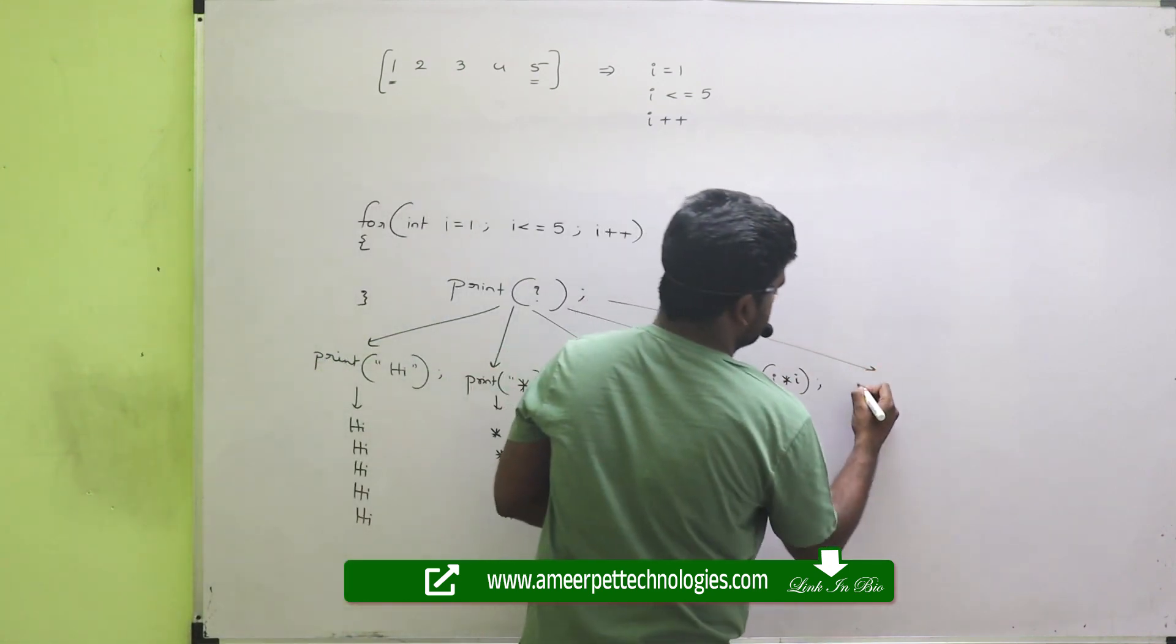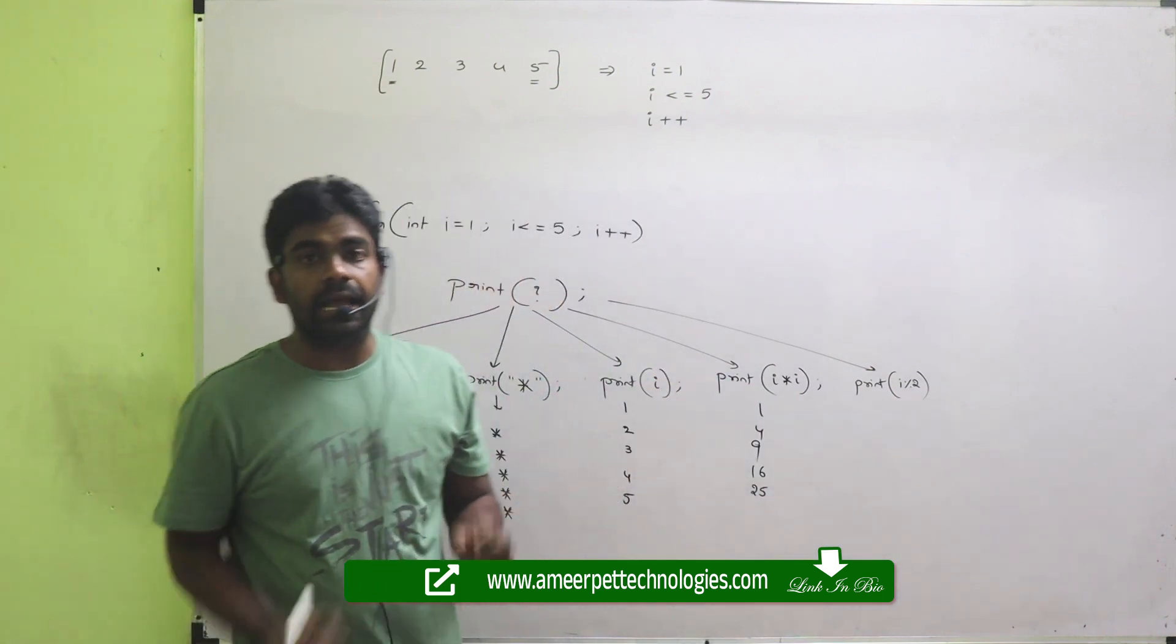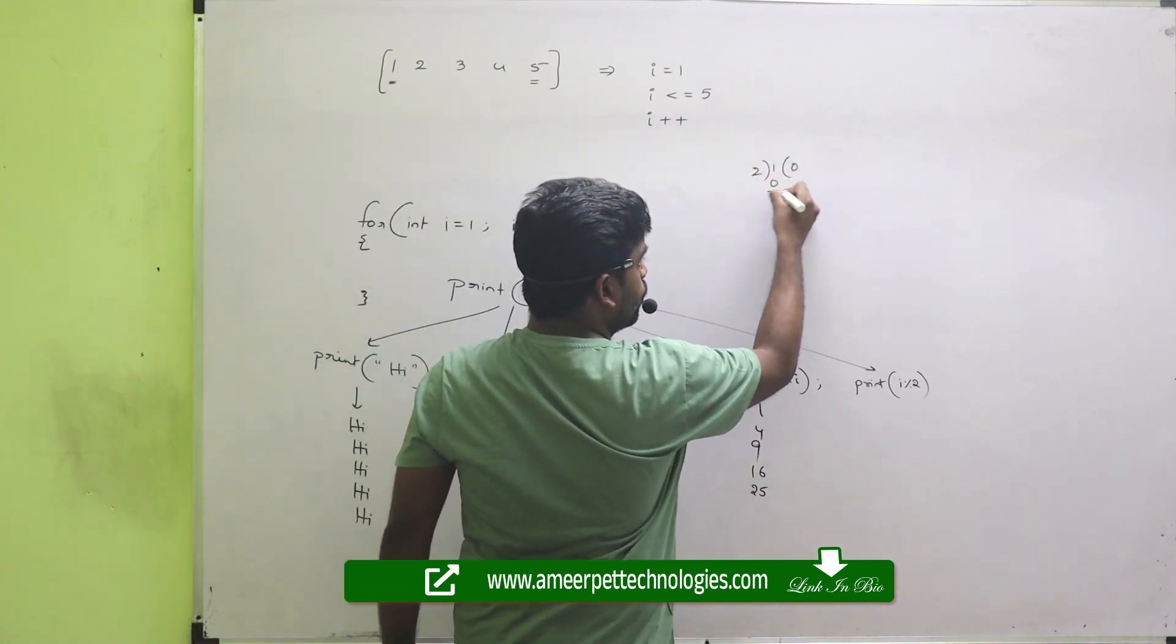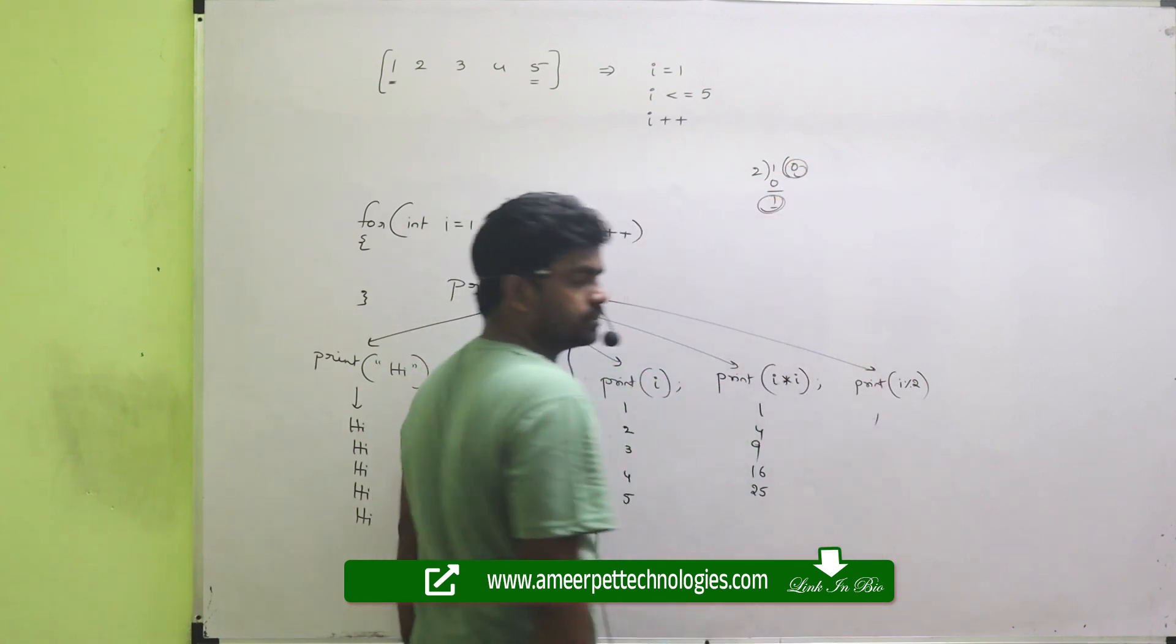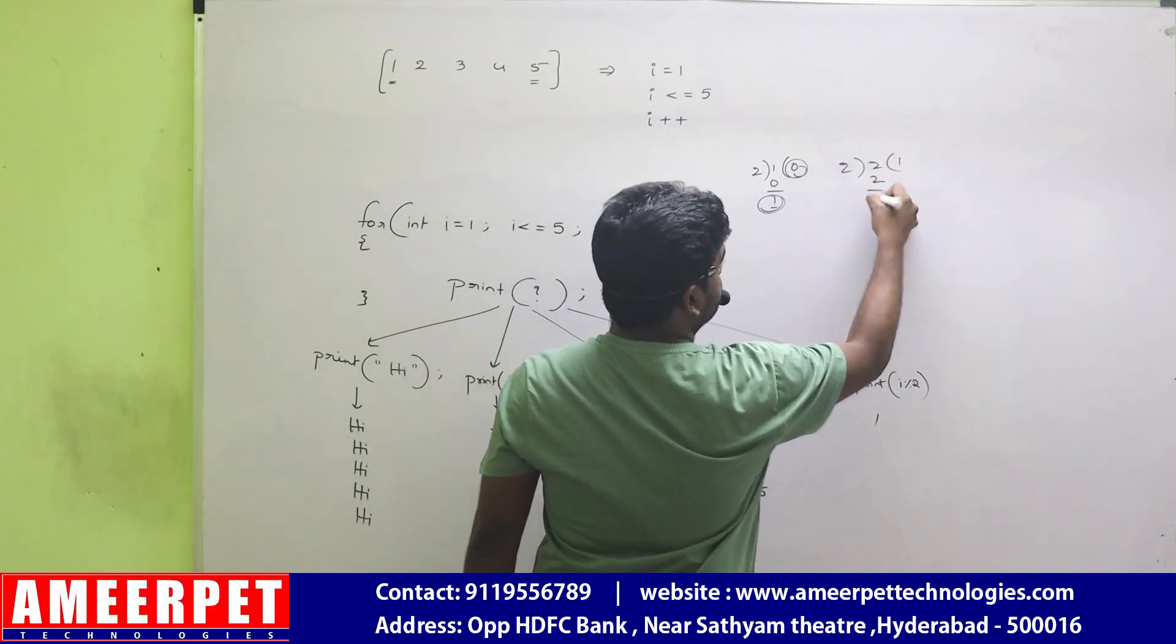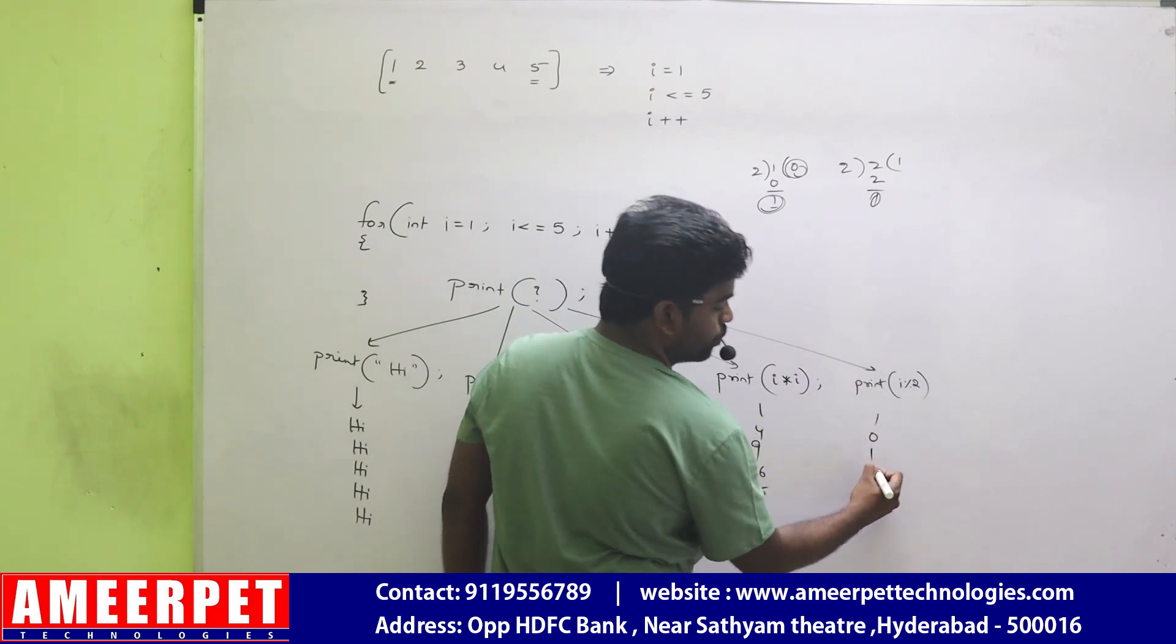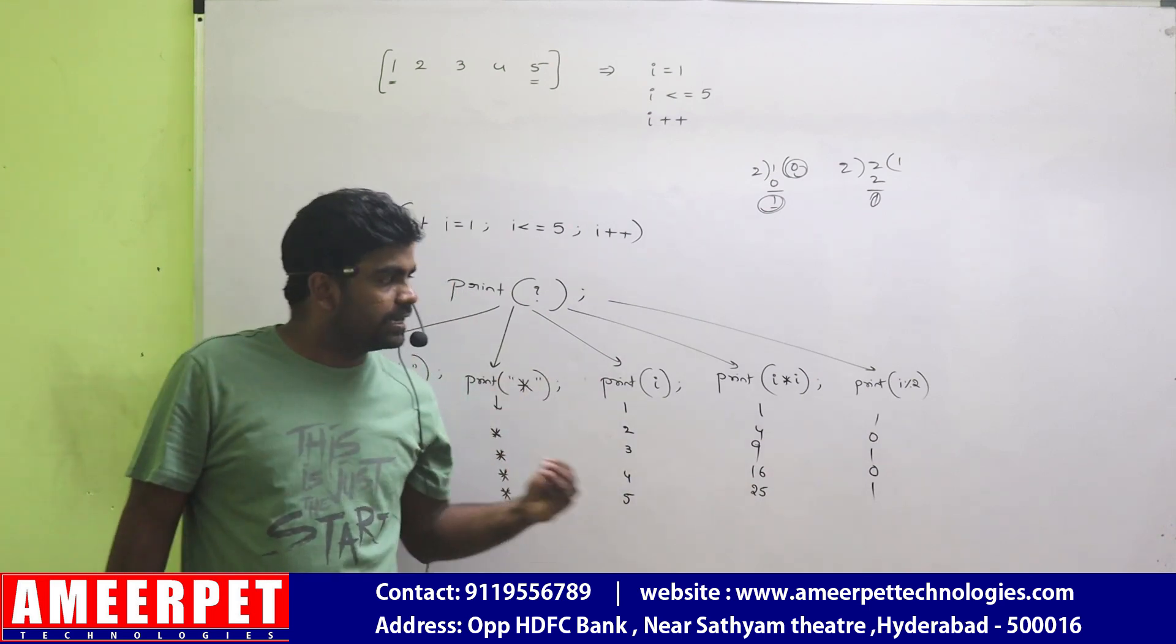Suppose can I print here, print I mod 2? You understood what I am printing. I mod 2. So what is that I value? 1. Just 1 you divide with 2. Can you divide with 2? No, so you will get the remainder 1. Suppose if it is 2, yes you can divide with only one time so that remainder is 0. So 2 mod 2, remainder is 0. 3 mod 2, 1. 4 mod 2, 0. 5 mod 2, 1. So you will get binary values whenever you are dividing with 2.